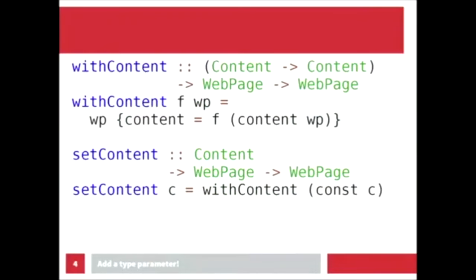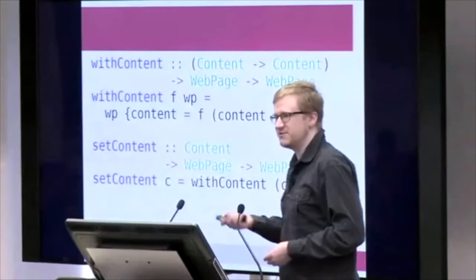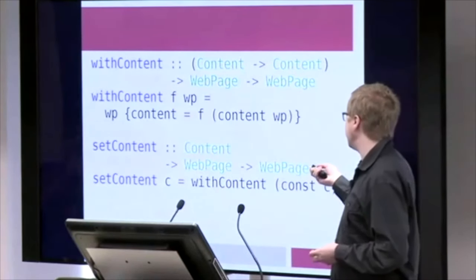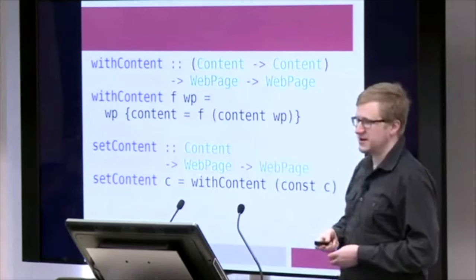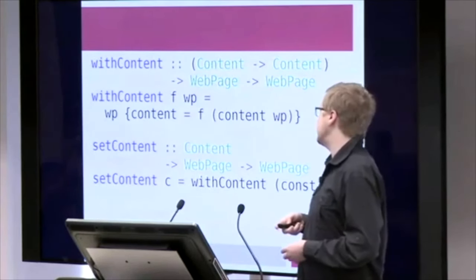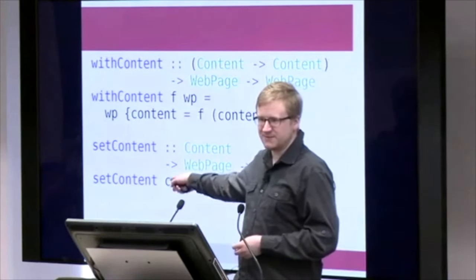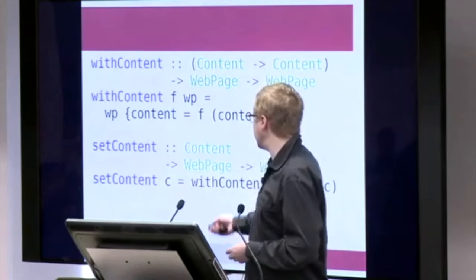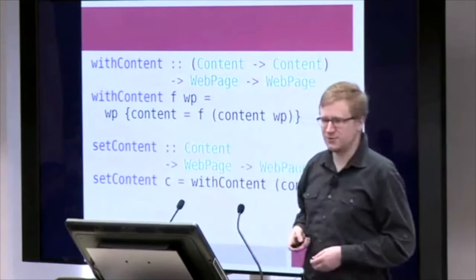I also have a couple of simple functions over this data structure. A little setter — 'with content' — which is a primitive setter in lens speak. We take a content transformer function and yield a webpage transformer function. And as with every transformer like this, you can derive a simple setter 'set content' from it. Set content takes a content value, puts it in your argument webpage, and you get a result webpage.